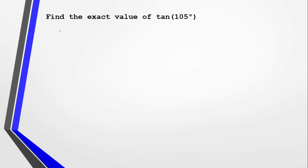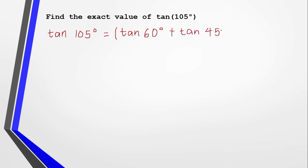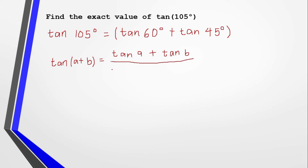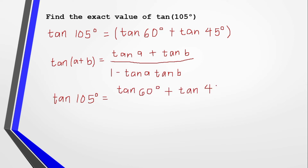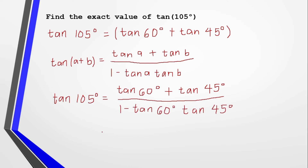Example: find the exact value of tangent 105 degrees. We have to split the given number into the sum or difference of unit circle values we know. So tangent of 105 degrees equals tan of 60 degrees plus tan of 45 degrees. We use the formula: tangent of (a plus b) equals tan a plus tan b over 1 minus tan a times tan b.